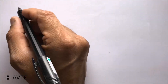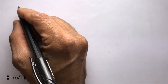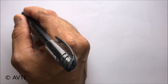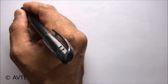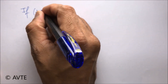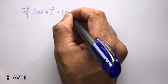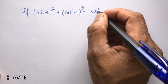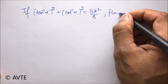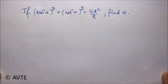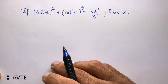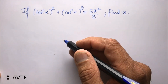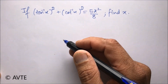Hello students, we are solving a very important question on inverse trigonometry that came in the CBSE exam 2015. The problem is: if tan inverse of x whole squared plus cot inverse of x whole squared is equal to pi squared by 8, then find the value of x.